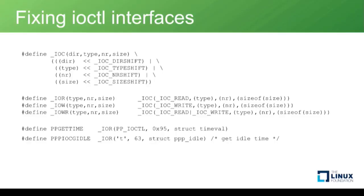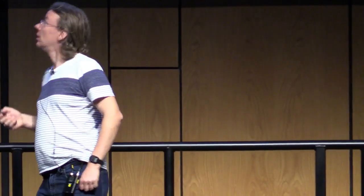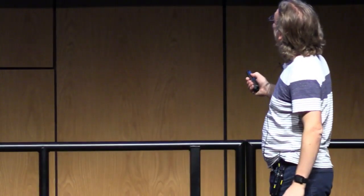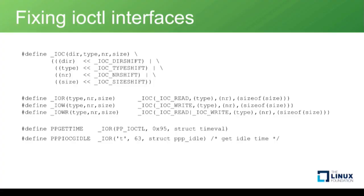One of the harder problems is user space interfaces. When you have a user space interface, you have to change both the kernel and user space at the same time in the same way, and ideally users don't ever see it — you just recompile your program and it should work. ioctl is the most common user interface in a device driver. We have fancy macros that define ioctl command codes using the size of the argument type, so if the struct changes size, the command number changes automatically.